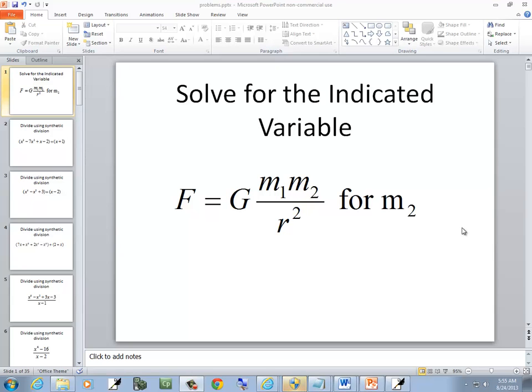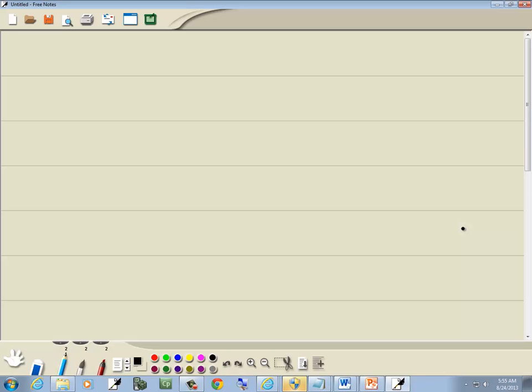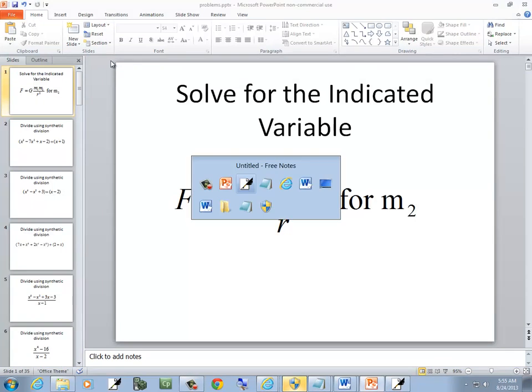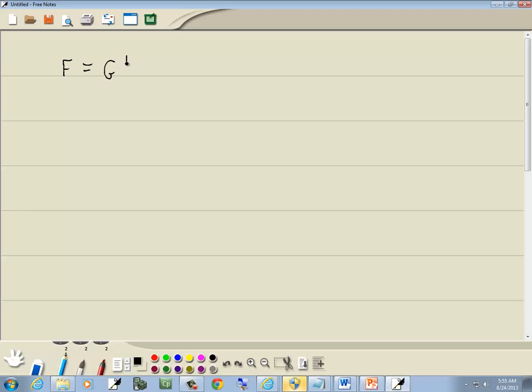In this problem, we're going to solve for the indicated variable. So we've got F equals G M sub 1 M sub 2 over R squared.